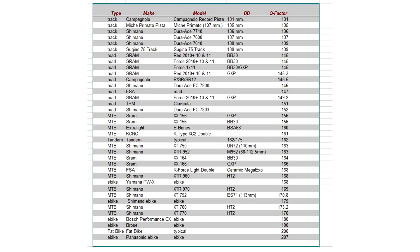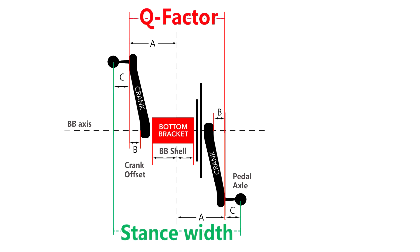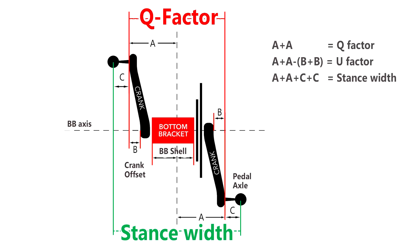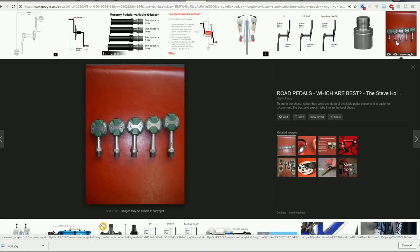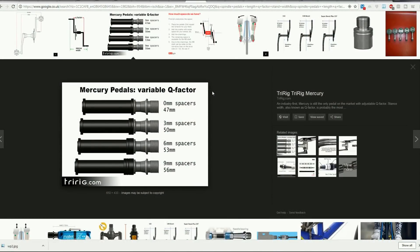On top of Q Factor, there's stance width — effectively the Q Factor plus your pedal displacement: how long your pedal axles are and where your cleats are positioned. Certain pedals like Speedplay come with aftermarket axles in up to five different lengths. The Mercury pedals from Tri-Rig similarly allow you to boost them out via spacers by up to an additional nine millimeters. So if you start with a narrow Q Factor, you can get wider via pedal axle length to achieve a fit that's comfortable for you.